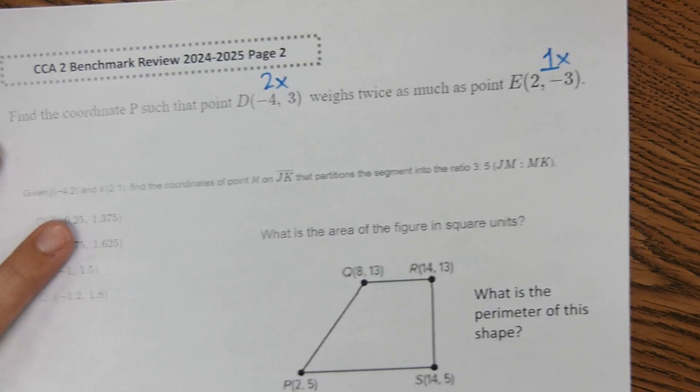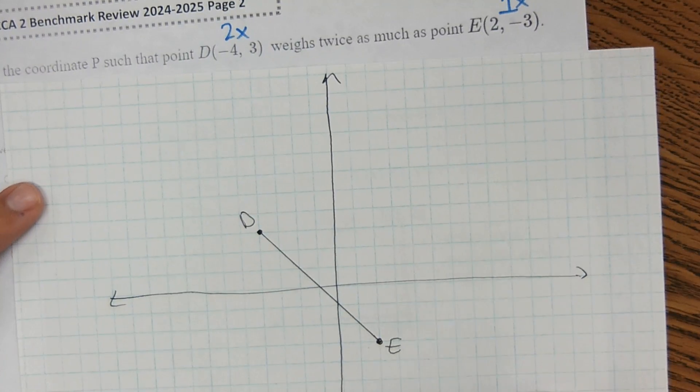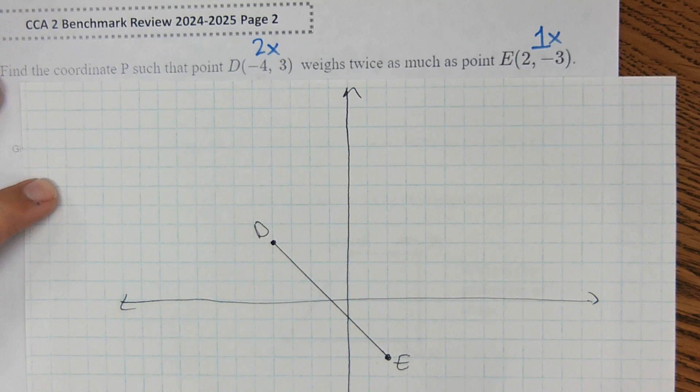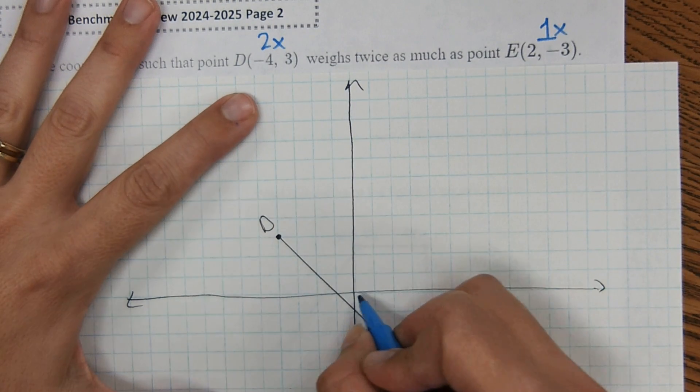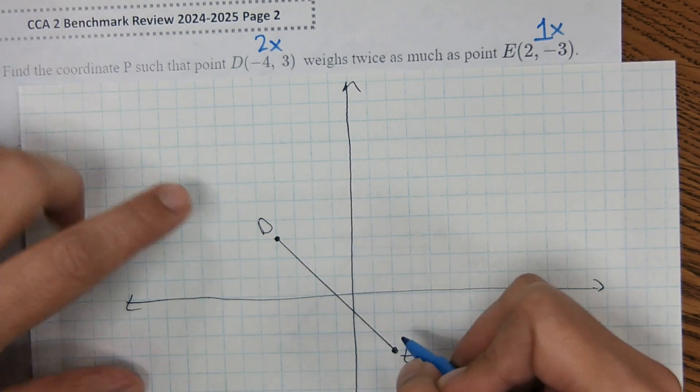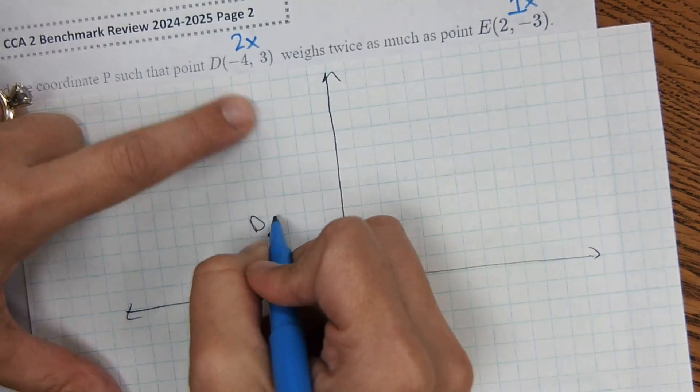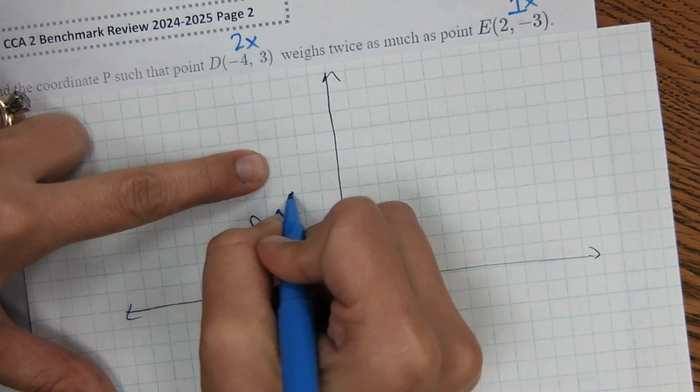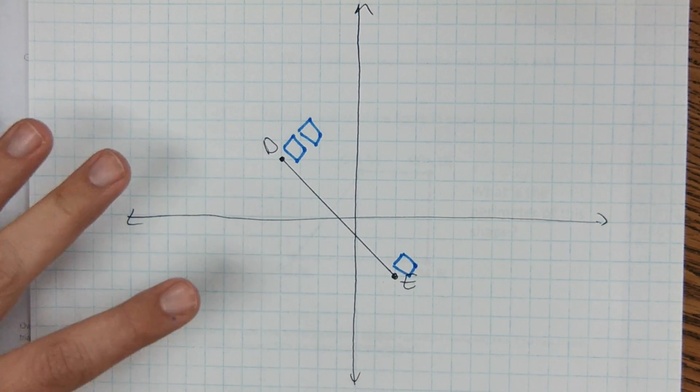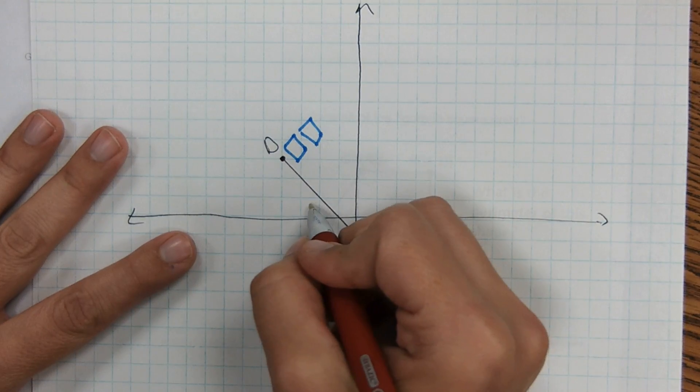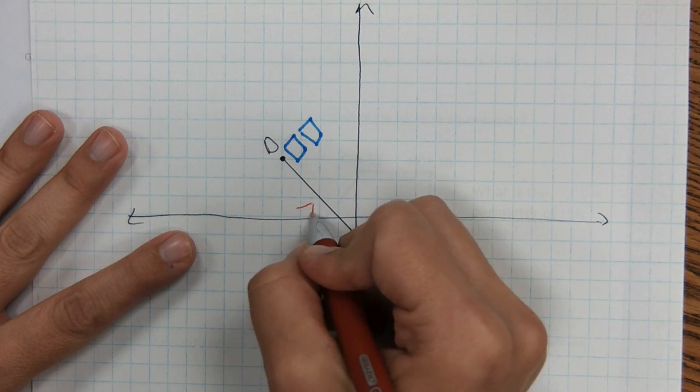So you'll have a piece of graph paper that you can use. I'm showing you here, I graphed out these points. So I have D at negative 4, 3, and E at 2, negative 3. And it says D has a weight of 2, so imagine like two blocks here. And then E has a weight of 1. So the balance point would be like right here actually.